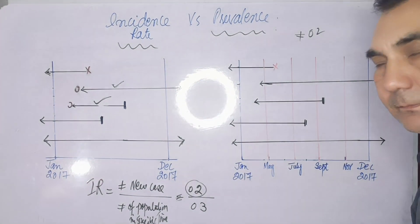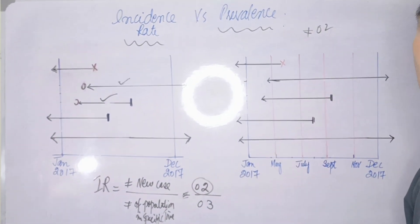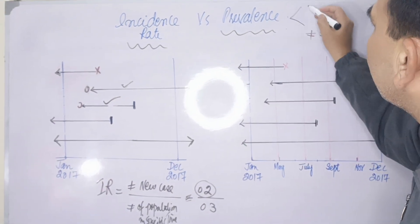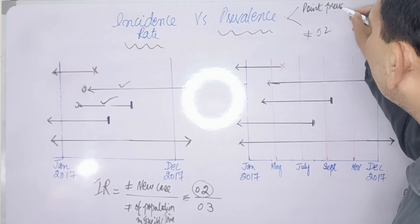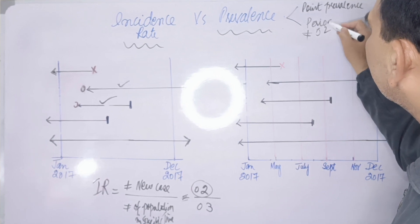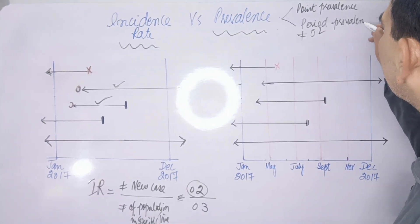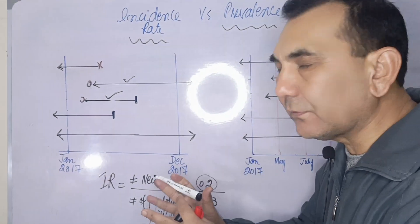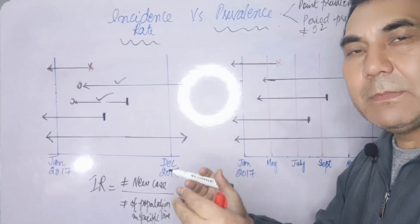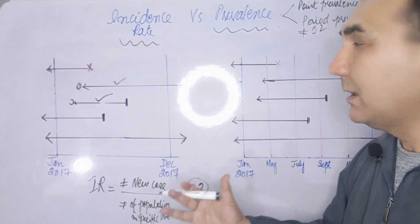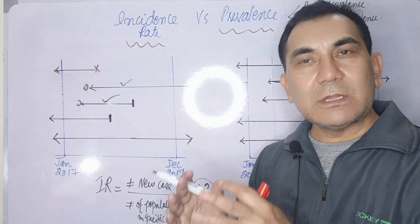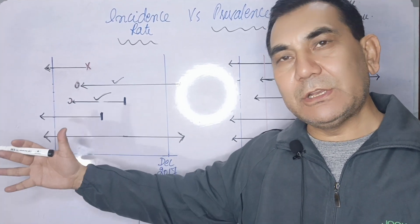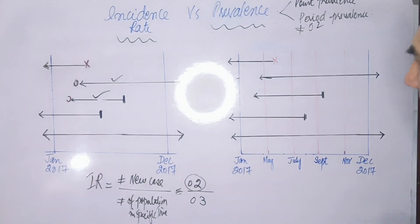Now the second example is about prevalence. Prevalence has two types: point prevalence and period prevalence. Point prevalence is the burden of disease — the proportion of disease in a specific point in time, which may be a month, a week, or a year. Period prevalence is the burden of disease over a specific period of time, which may be months, years, five years, or a decade.